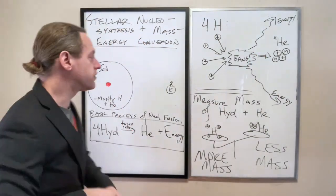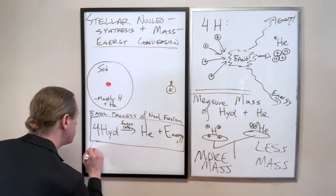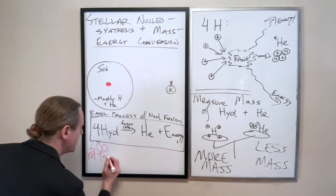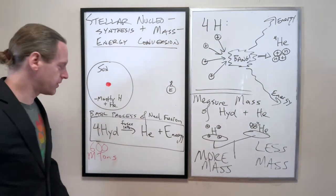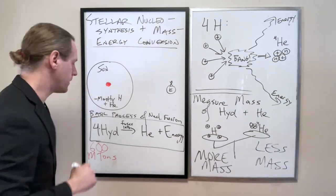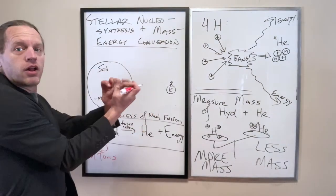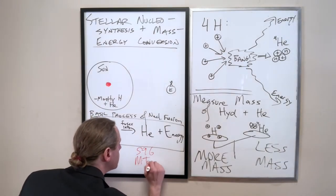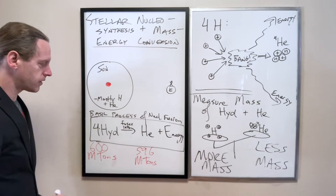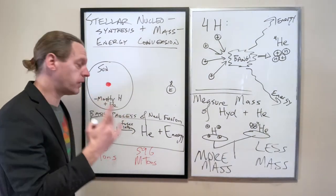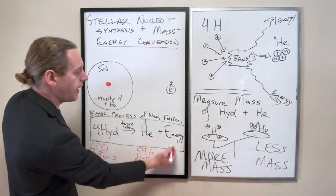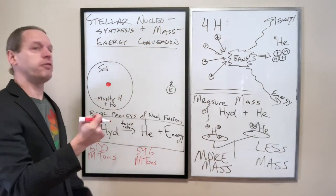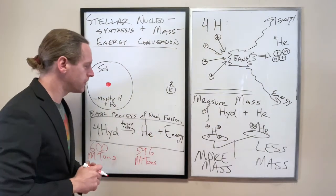Every second, the sun transforms 600 million tons, not 100 tons, 600 megatons of hydrogen, metric tons, by the way, into a smaller amount of helium. That missing 4 million tons is exactly where the energy of the sun comes from. It's literally destroying itself to give us light. Isn't that kind of cool?